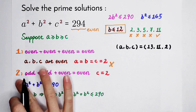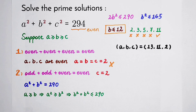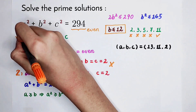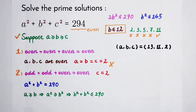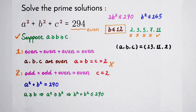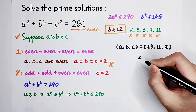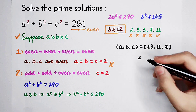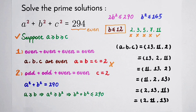This solution is under the second case. Don't forget that we supposed a is the biggest and c is the smallest. If you suppose b is the biggest and a is the smallest, there is another pair of solutions. In total, there are 6 pairs of solutions. Do you get them? Don't forget to give us a thumbs up and subscribe for more videos. See you next time, bye-bye!